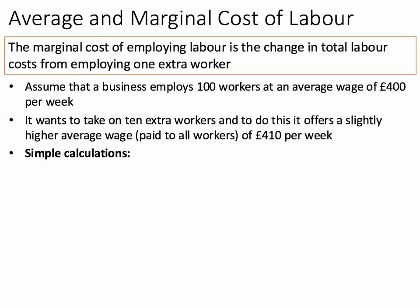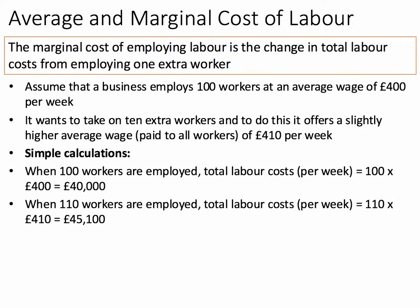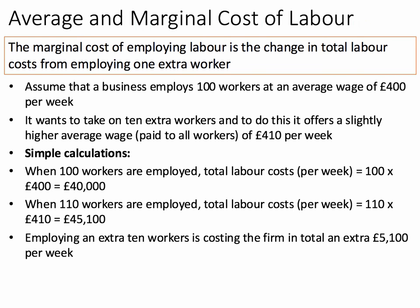Let's do some simple calculations. When the firm is employing 100 workers, the total labour costs per week are £100 times £400, which is £40,000 per week. When they add an extra 10 workers, the total labour costs are now 110 workers multiplied by the higher average wage of £410 per week, which comes to £45,100. Therefore, employing an extra 10 workers will cost the firm an extra £5,100 per week in total.